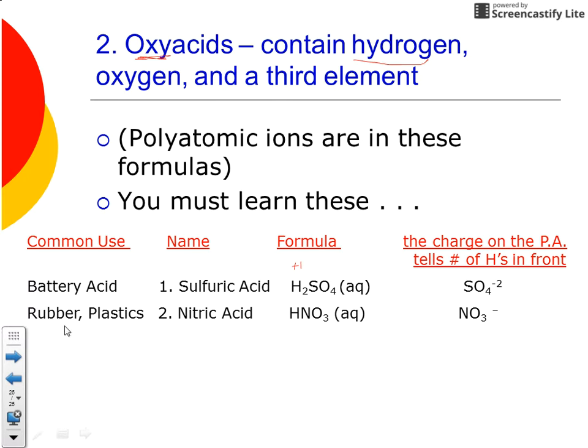The next one is nitric acid, HNO3. Notice it has nitrate in it. Common use for this is used in the production of rubber and plastics, also in some fertilizers and medications as well.